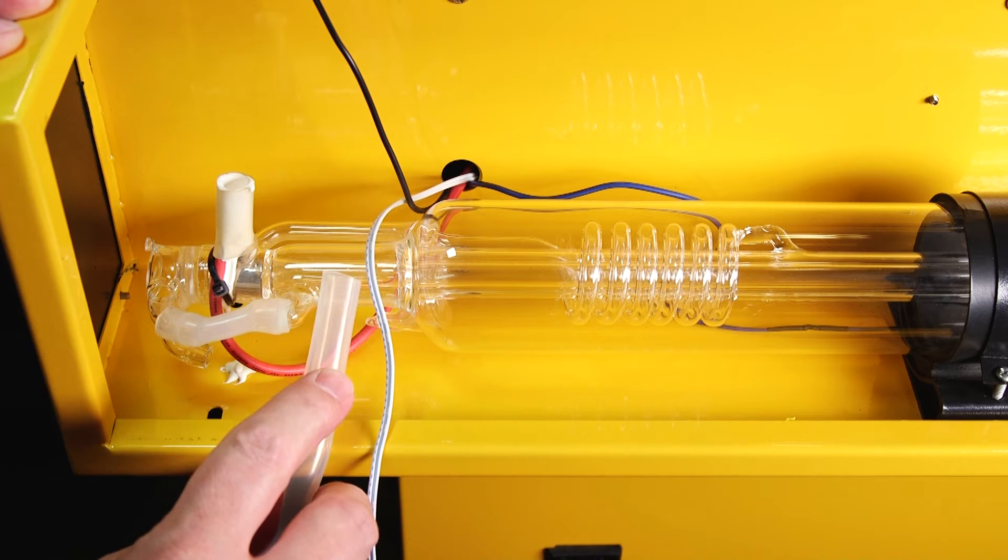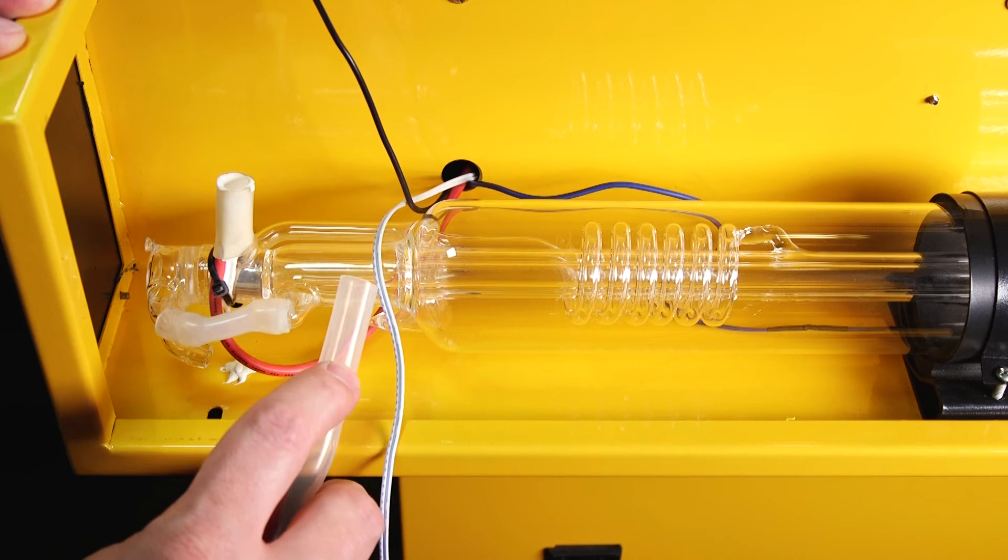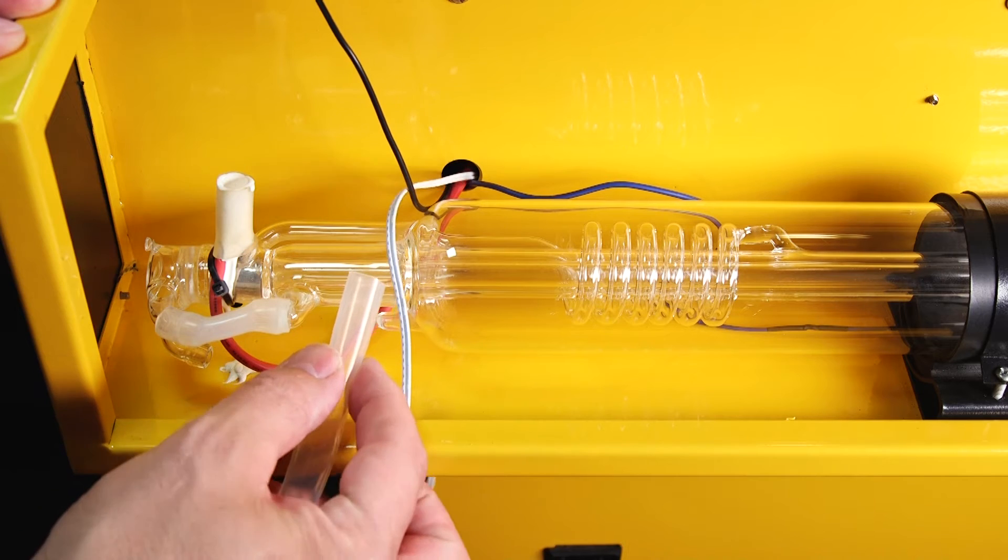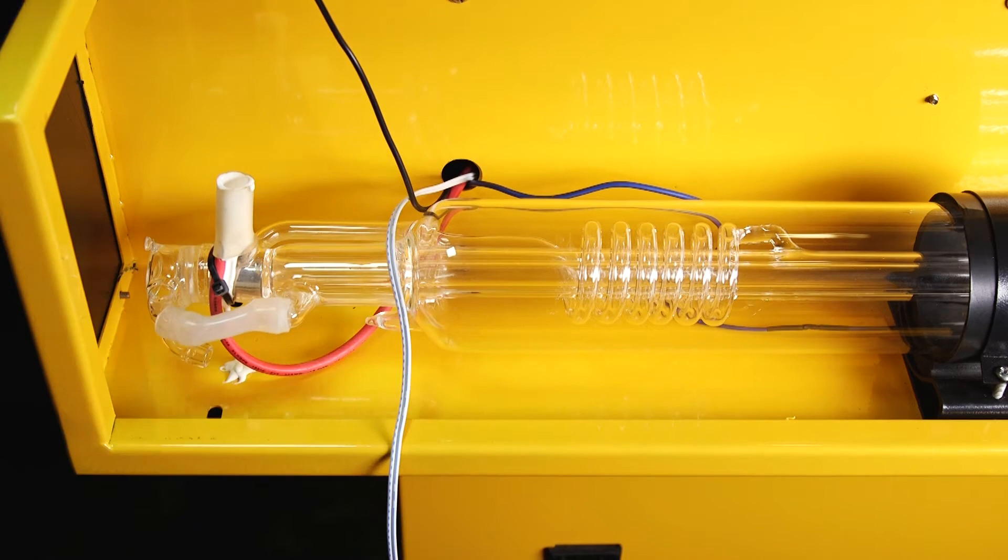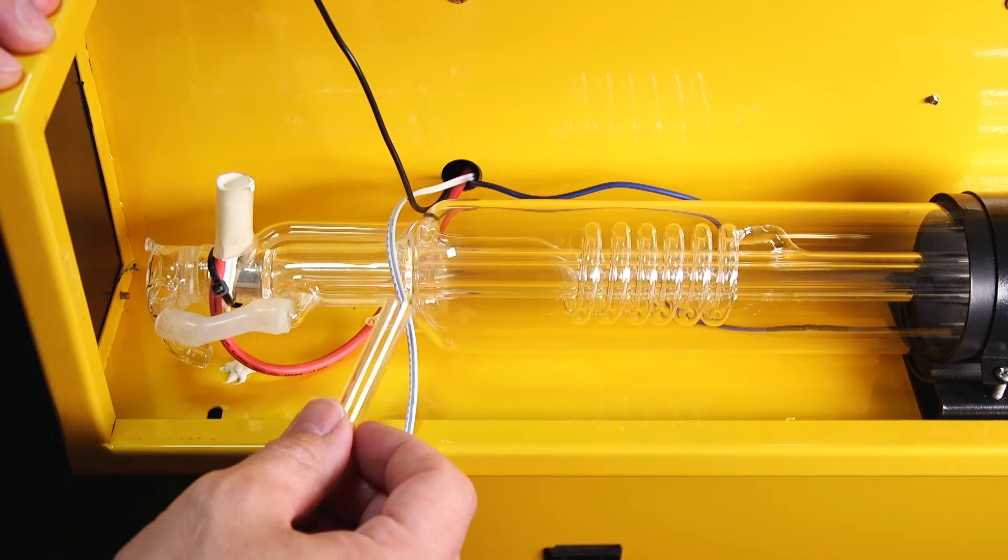This was because the tubing that came with the machine was metric and I only had available to me standard sized tubing. To fix this we're going to need to make a little bit of an adapter here and I'm going to use some three-eighths outer diameter vinyl tubing to make this adapter with.